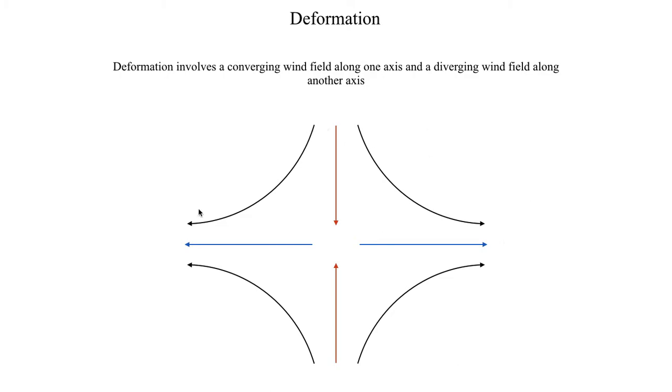And then to maintain some sort of continuity you'll usually see something that looks like this. The flow kind of curves in the direction of the divergent axis, so it starts off going in the direction of the convergent axis and then turns in the direction of the divergent axis. So that's what we mean by converging along one axis, in this case the y-axis, and diverging along the x-axis. But you can rotate this picture around to manipulate the axes, but this is basically what a deformation flow pattern looks like. Convergence along one axis, divergence along another axis.